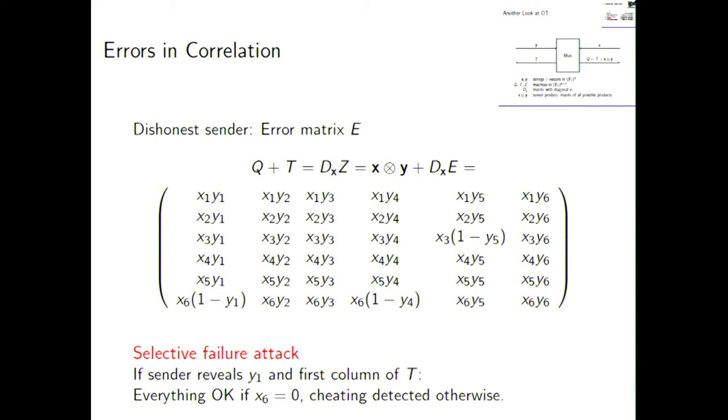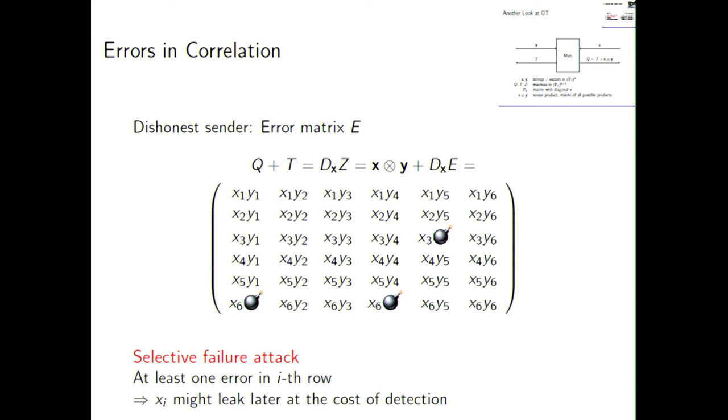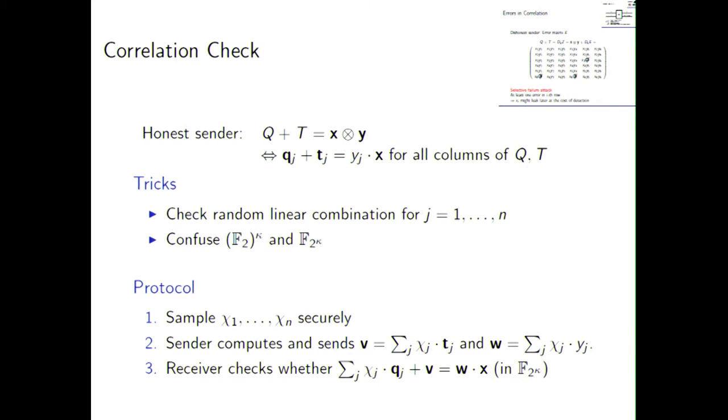What do we mean by that? Just imagine as an example that at the later stage, the sender will reveal essentially his information for the first column of this. The first column here. And that means he has to reveal Y1 and he has to reveal the first column of T. Now, the receiver can essentially check on him and the interesting thing now is if X6 is 0, that means nothing special happens because 0 times whatever is always 0, so everything will be fine.